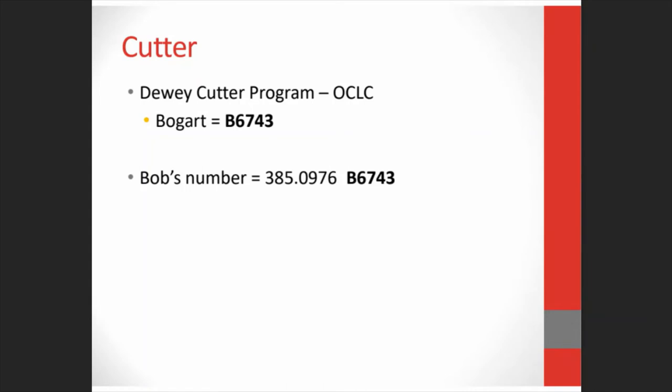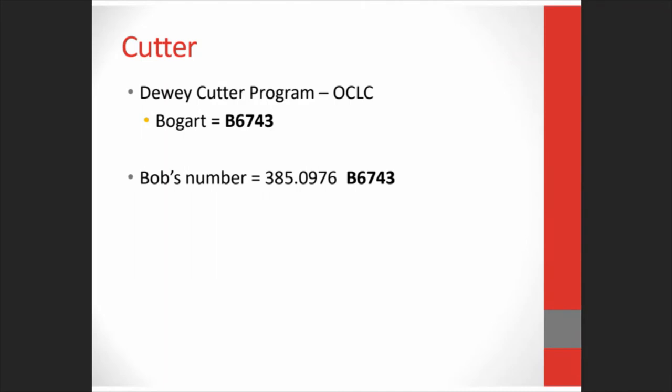If you had multiple editions of the book, you could add a year on to the end. But most libraries have gone away from doing a traditional cutter and simply use the first three or four letters of the author's last name. This is easier for browsing, but not as good for organizing — works by authors with similar last names tend to get mixed up.